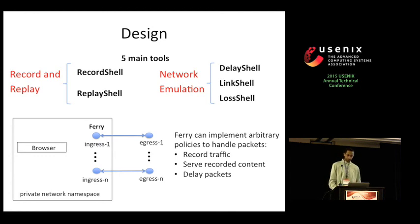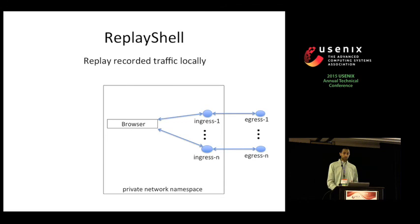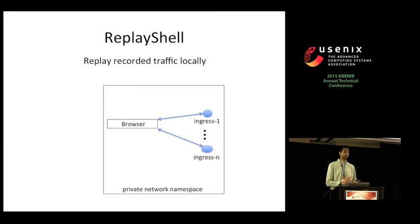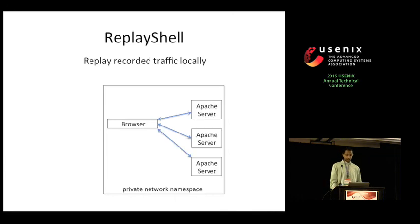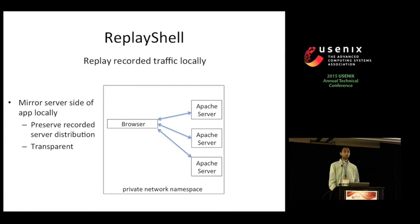Replay shell is used to replay recorded traffic locally. It does not need egress interfaces because it only serves recorded content — no traffic actually has to leave its namespace. To serve the content, replay shell creates an ingress interface for each IP address that was contacted during recording, and on each interface it runs a separate Apache server with access to all the recorded content. This preserves the multi-server nature of a recorded web application. Additionally, by configuring each ingress interface with the IP of its recorded counterpart, replaying is totally transparent to a client application.